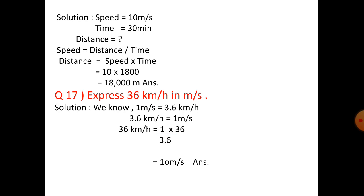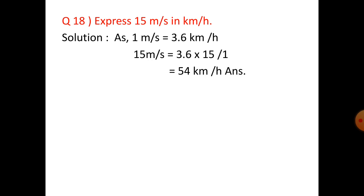Question 17: Express 36 kilometer per hour in meter per second. Since 1 meter per second equals 3.6 kilometer per hour, 36 km/h equals 1/3.6 into 36, which equals 10 meter per second. Question 18: Express 15 meter per second into kilometer per hour. Since 1 meter per second equals 3.6 km/h, 15 meter per second equals 3.6 into 15, which equals 54 kilometer per hour.